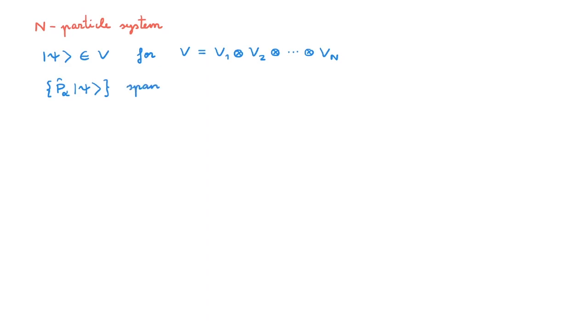This set of kets span a subspace of V, which we call V Psi. Any state in V Psi is a state that mathematically describes the same situation because the particles are identical, so this is exchange degeneracy for an n-particle system.